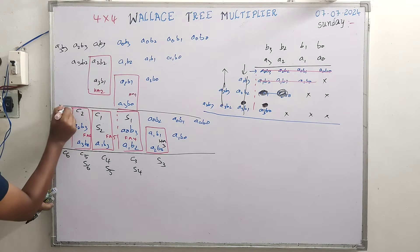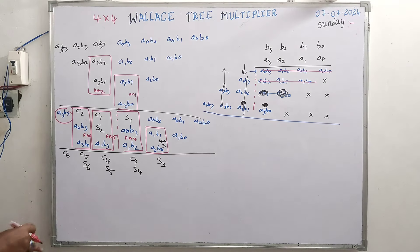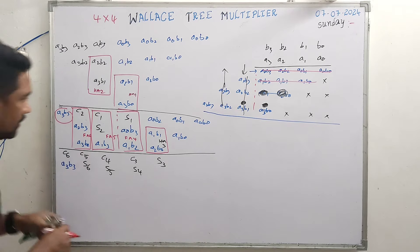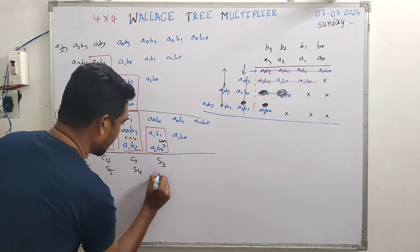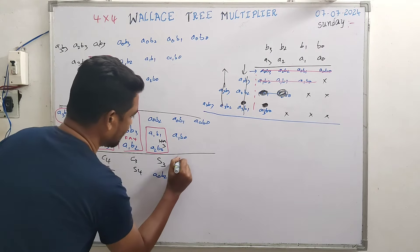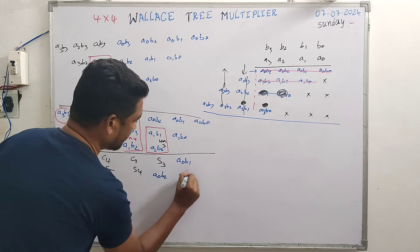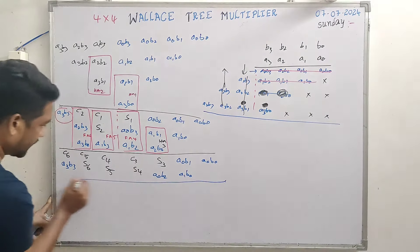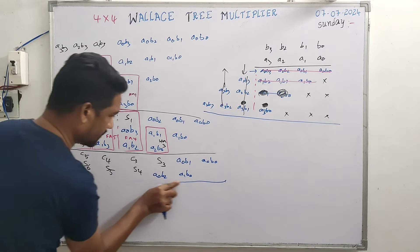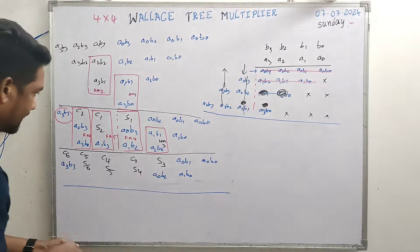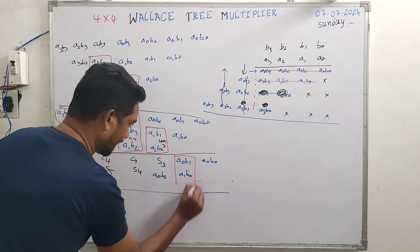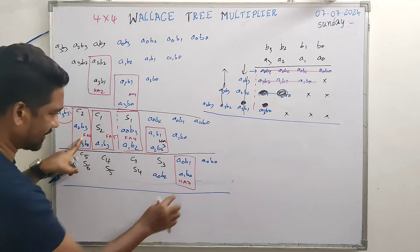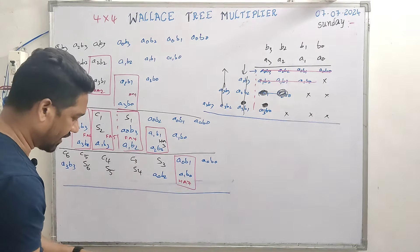A3·B3 is brought down as-is with no change. A0·B2, A0·B1, A1·B0, and A0·B0 also come down. This is another stage — probably the final one. Here, making use of half adder HA7, which produces sum S7 and carry C7.